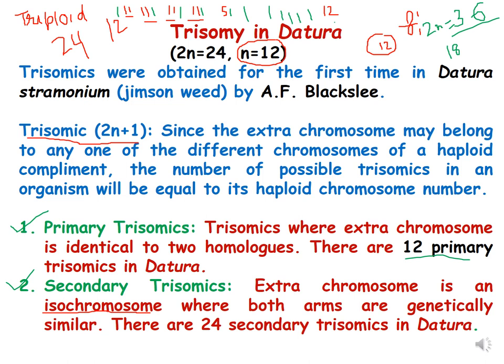When we consider how many kinds of trisomy are found in Datura, there are three kinds: primary trisomics, secondary trisomics, and tertiary trisomics. In primary trisomics, the extra chromosome is identical to the two homologous chromosomes. Since Datura has a gametic number of 12, there are 12 primary trisomics possible because the extra chromosome can belong to any of the 12 homologous pairs, giving 12 into 2 equals 24 somatic chromosomes. That is why 12 primary trisomics are possible in Datura.